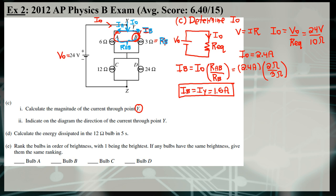Part C, part two: conventional current flows out of the positive terminal of the battery, up and to the right, then splits at the junction. Some charge goes left (through RA) and some goes right (through RB), so the current through point Y is directed to the right.